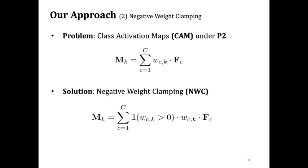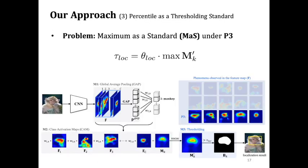To resolve the issue of M2, we use negative weight clamping, which simply ignores the features corresponding to the negative weights, since a negative weight implies it negatively contributes to identifying a target class.